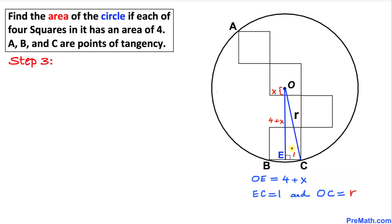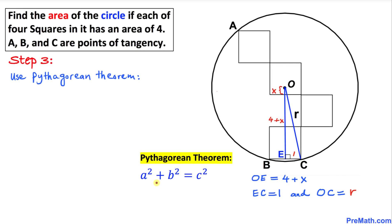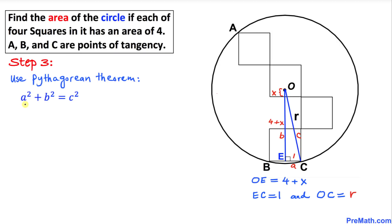We know that triangle OEC is a right triangle, so we are going to use the Pythagorean theorem: a² plus b² equals c². In our case, side EC is a, side OE is b, and the longest leg OC is c. Filling in: 1 squared plus (4 plus x) squared equals r squared.